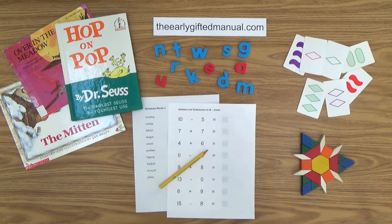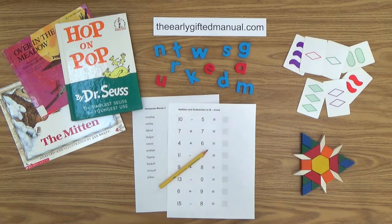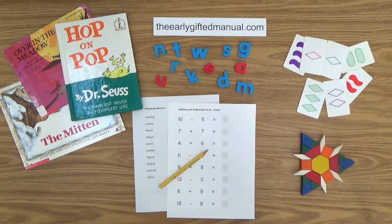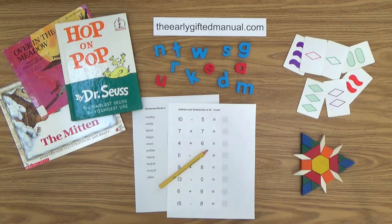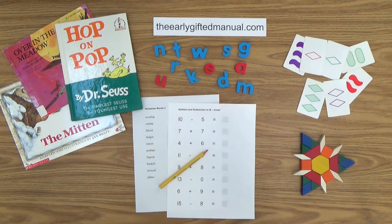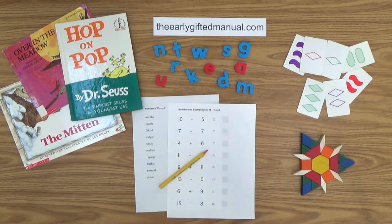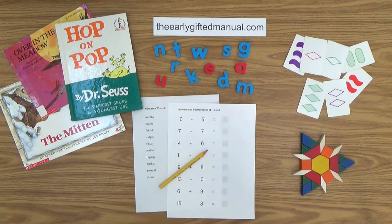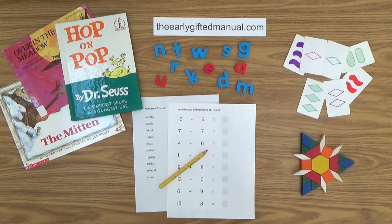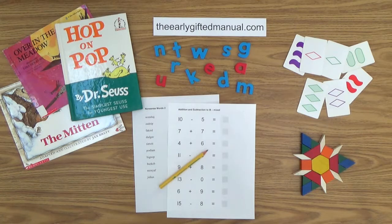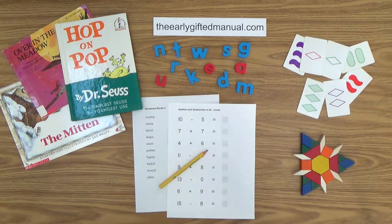As the video lessons are designed to work in conjunction with the program on my website, I ask you to click on the URL link in the description box below and this action will take you to theearlygiftedmanual.com. By doing that, you will be able to put this lesson and all of the video lessons here on my channel in the proper context of the total program that I am presenting to you and your child.